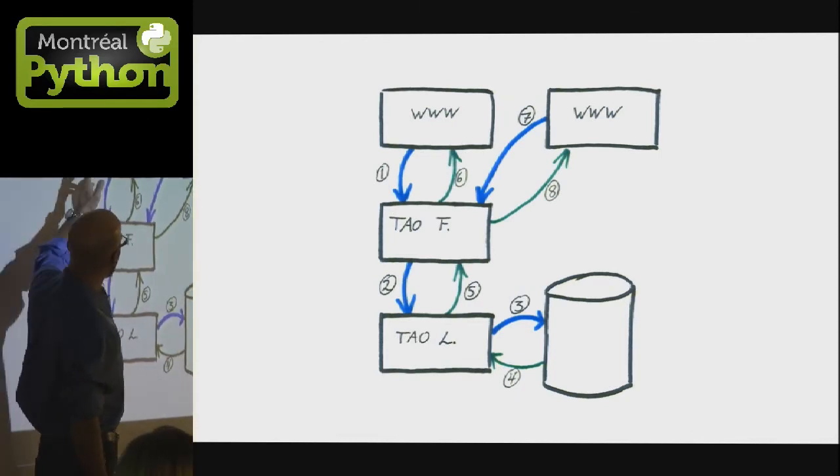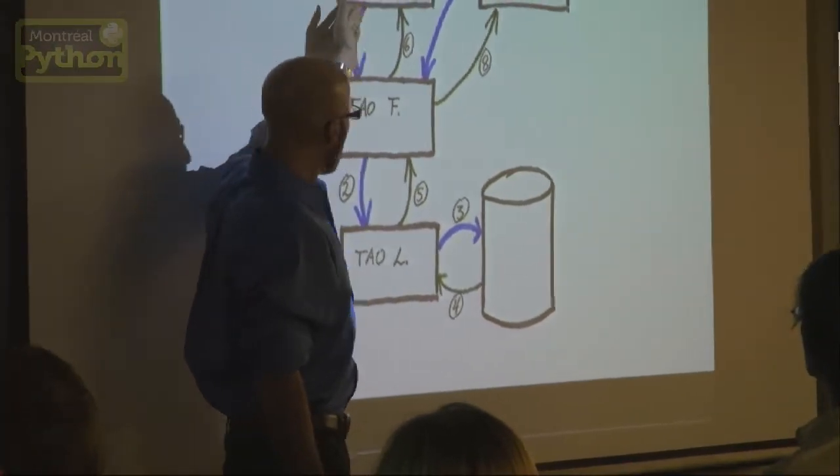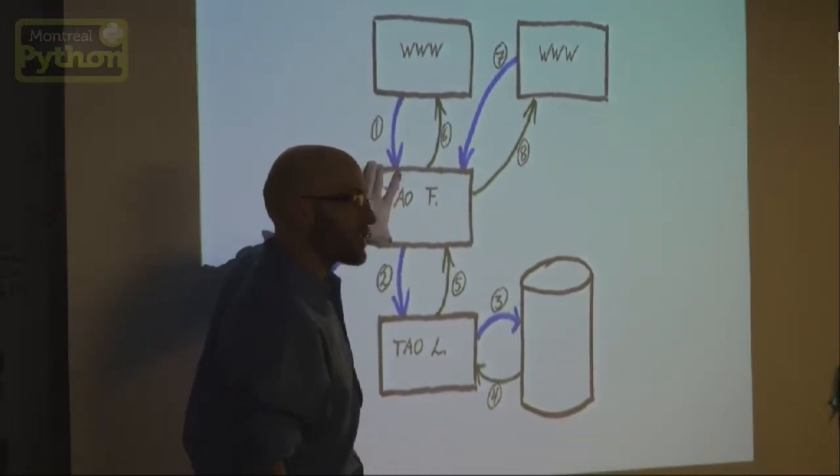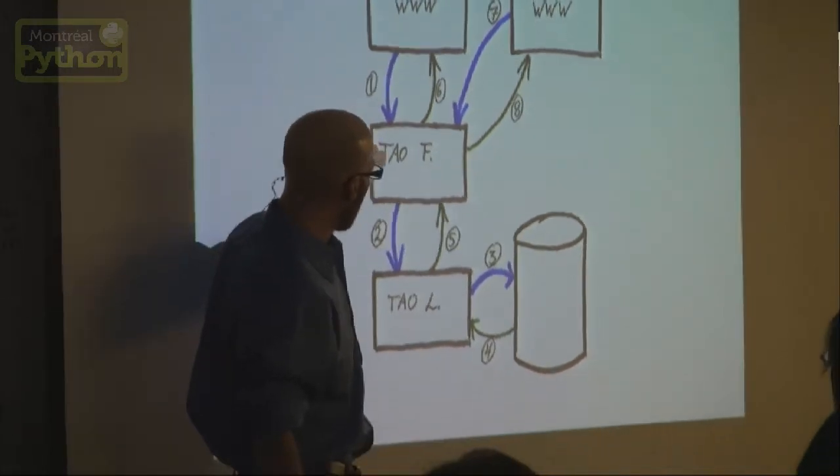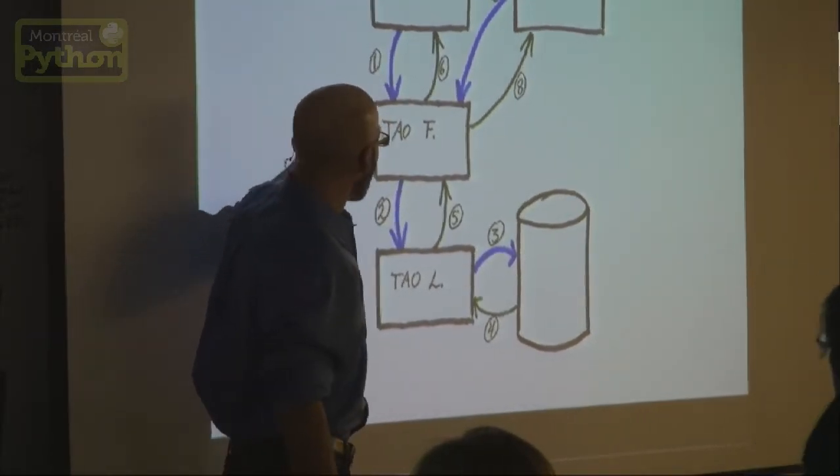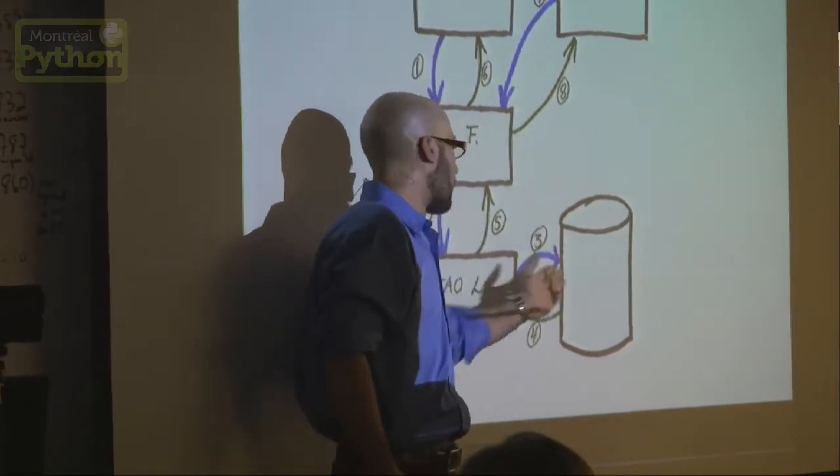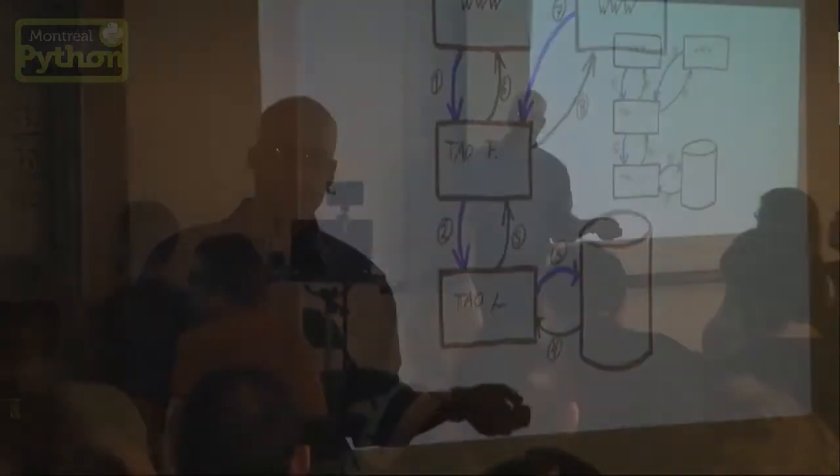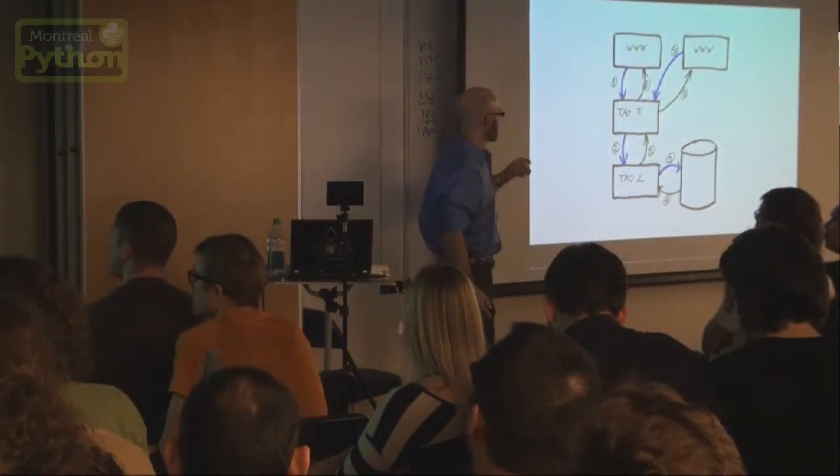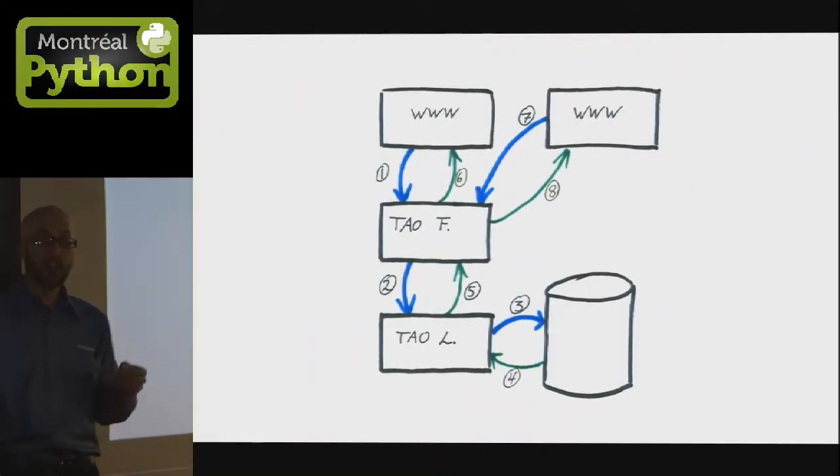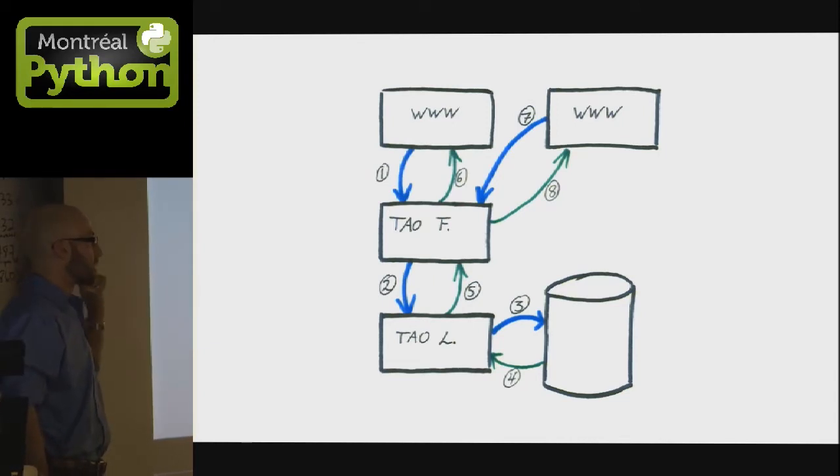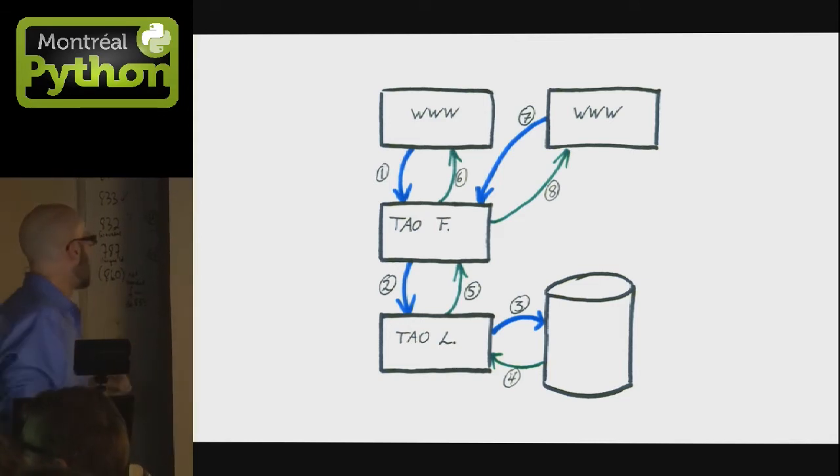TAO is a read through, write through cache. That is using two layers. So if a web server is looking for a piece of data, it's going to ask a TAO follower. TAO followers are co-located inside front end clusters with the web servers. And if the data is not in the TAO follower, the TAO follower is going to ask a TAO leader who is in turn responsible for asking the data store. Same thing for writes. And the main advantage of having this two layer caching system is that we get a better hit rate. But mostly we solve many concurrency problems that require a lot of logic inside the memcache client.